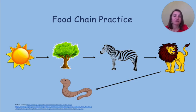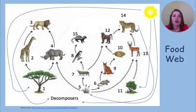Now that we have mastered food chains, we are going to review food webs. Food webs show the overlap of food chains in an ecosystem. Food webs represent the flow of energy in many different food chains that are present at the same time in an ecosystem. Organisms may be part of multiple food chains.